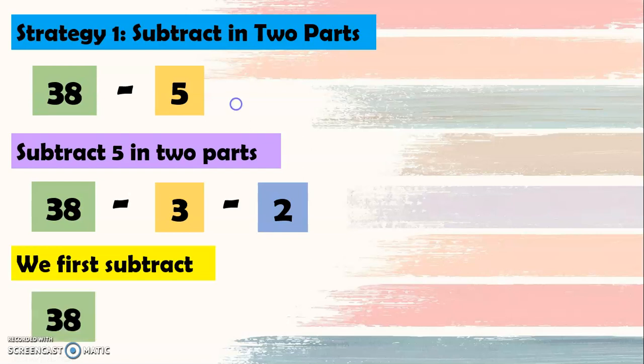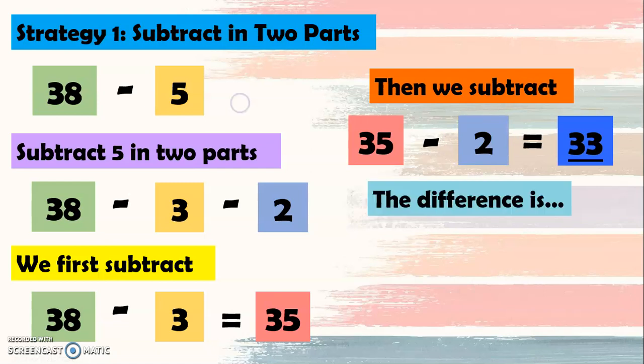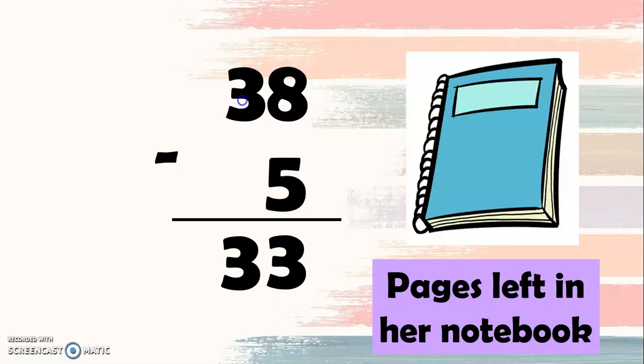And then we first subtract 38 minus 3 equals 35. Then we subtract 35 minus 2 equals 33. So the difference is 38 minus 5 equals 33. So 33 pages were left in Ina's notebook.